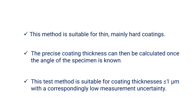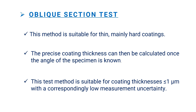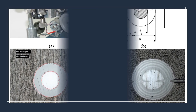Oblique section test. The oblique section test is a variant of the ground sample test. This method is suitable for thin, mainly hard coatings. By grinding the section at an angle, the coating thickness is visually stretched, which makes it easier to measure accurately. The precise coating thickness can then be calculated once the angle of the specimen is known. This test method is suitable for coating thicknesses less than 1 micrometer, with a correspondingly low measurement uncertainty in the main area of the specimen.